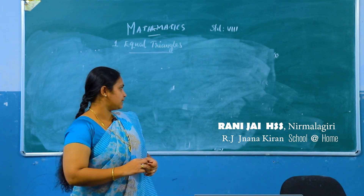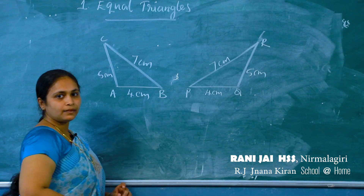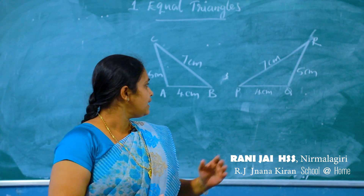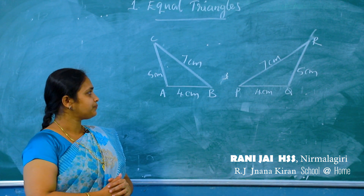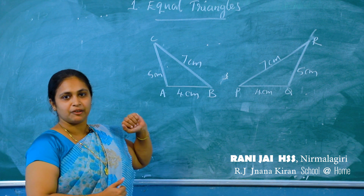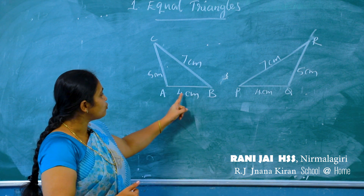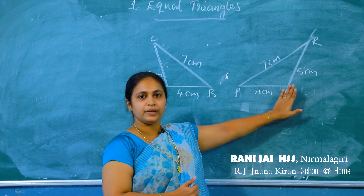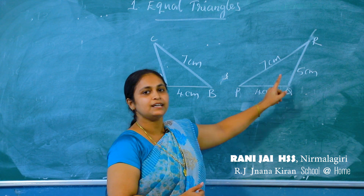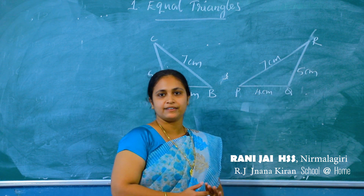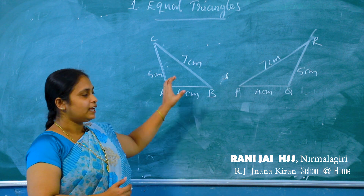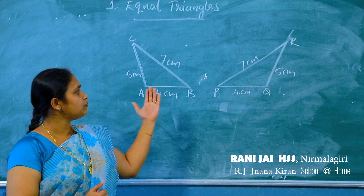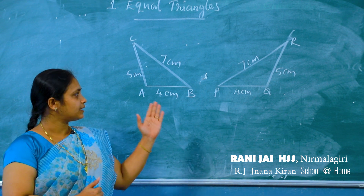Now, consider two triangles: triangle ABC and triangle PQR. Is there any speciality of these two triangles? In triangle ABC, the sides are 4 cm, 5 cm, and 7 cm. And in triangle PQR, the sides are also 4 cm, 5 cm, and 7 cm. We can see the sides of these two triangles are equal. Then, what about their angles? Are they equal?